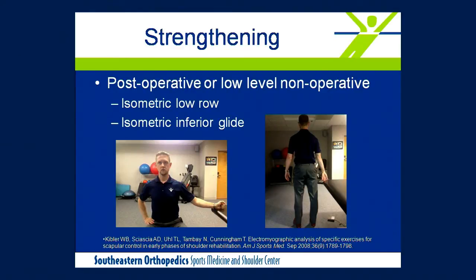Two isometric closed-chain exercises are ideal for post-operative or highly painful patients: the isometric inferior glide and the isometric low row. Studies have shown these exercises produce the highest muscle activation for the lower trapezius and serratus anterior among closed-chain options. The inferior glide involves pushing inferiorly through the table, adjusting table height to ensure correct muscle activation. The isometric low row involves pushing back into the table, adjusting the arm position relative to the table. These help patients connect with their periscapular muscles at a low level.